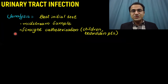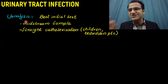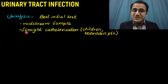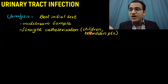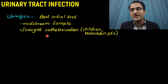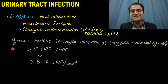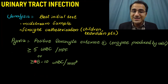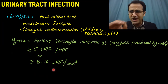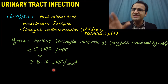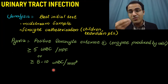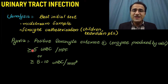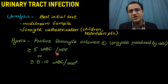Coming to investigations, urinalysis is the best initial test. A midstream sample is taken because the initial stream contains more bacteria from the passage. If the patient cannot produce urine — such as non-compliant children or bedridden patients — catheterization is done to obtain the sample. In urinalysis, we look for pyuria: greater than or equal to 5 WBCs per high power field, or greater than or equal to 8–10 WBCs per mm³, is diagnostic for UTI.